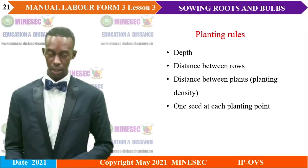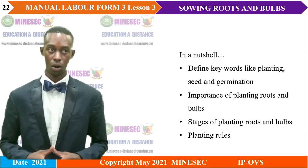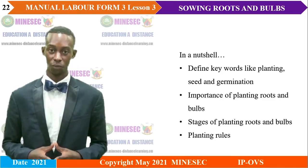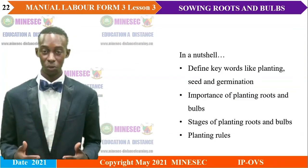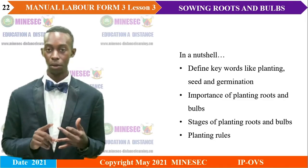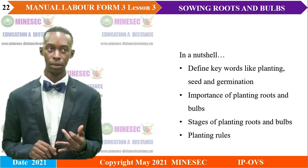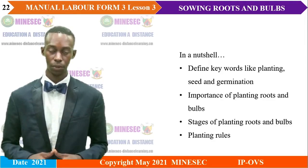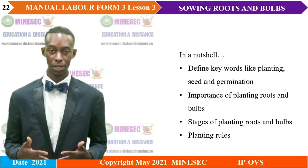Let's have a summary of our lesson. In this lesson, we looked at the definition of keywords like planting, seeds, and germination. We also looked at the importance of planting roots and bulbs, followed by the stages of planting roots and bulbs, and lastly the planting rules.